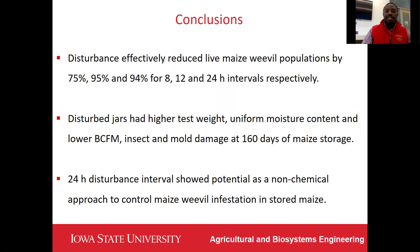In conclusion, disturbance effectively reduced live maize weaver populations by 75%, 95%, and 94% for the 8-hour, 12-hour, and 24-hour intervals respectively. Disturbed jars had higher test weight, uniform moisture content, lower broken corn and fine material, and lower insect damage and mold damage at the end of the storage period. The 24-hour disturbance interval showed potential as a non-chemical approach to control weaver infestation in stored maize.